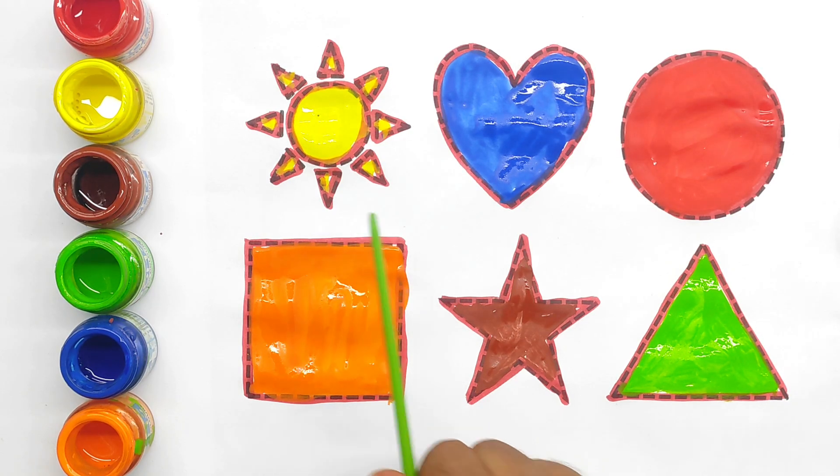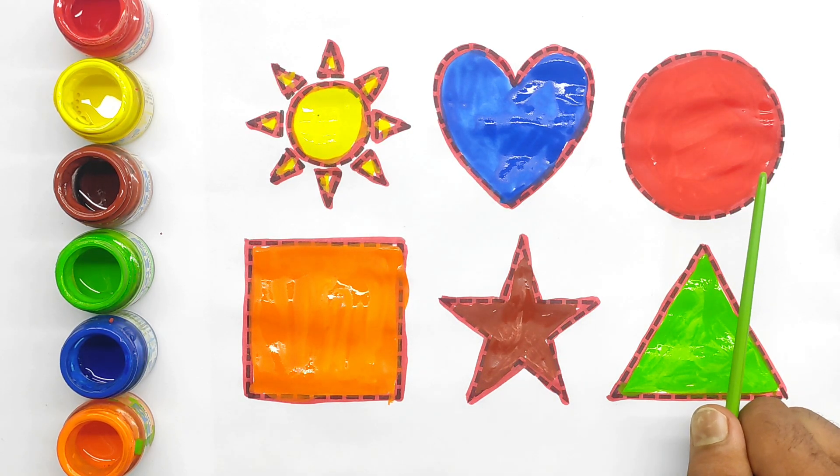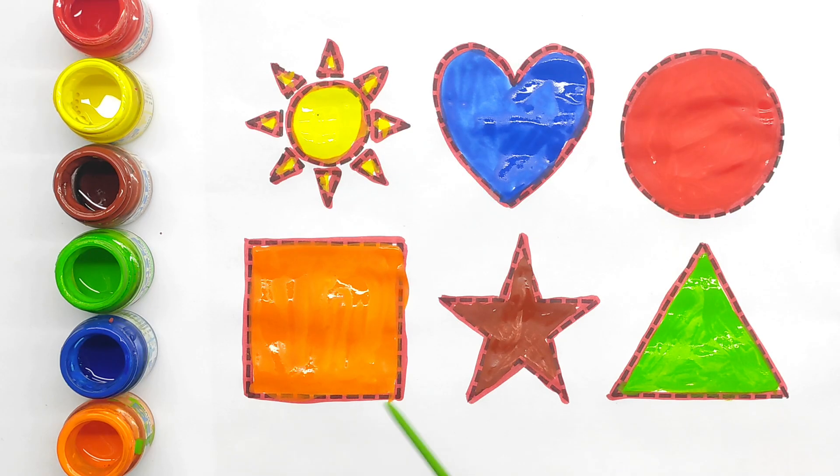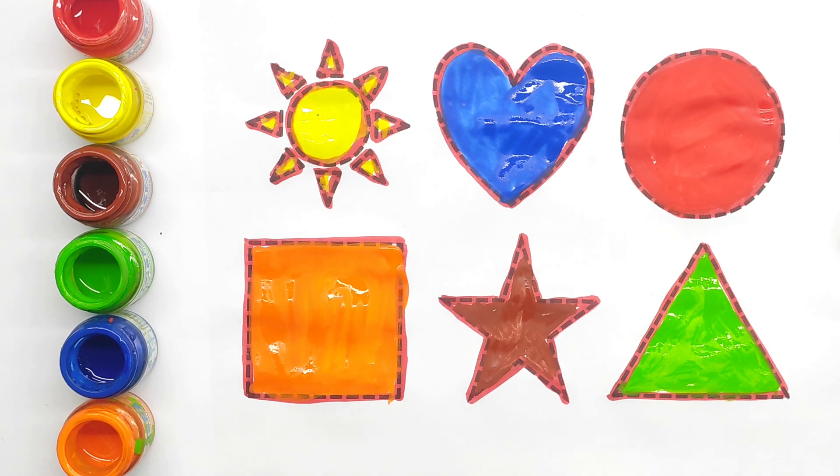Sun, square, star, triangle. Kids, you can see the video, like and subscribe. Thank you.